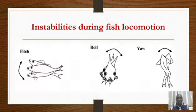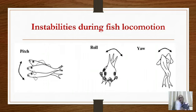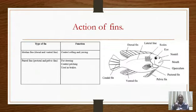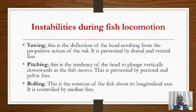That image is showing us yawing — the head getting deflected side to side. If it gets pushed like that, that side-to-side movement would make the fish unstable, which is why we call it an instability during locomotion. Yawing is prevented by the dorsal and ventral fins — the dorsal fin up and the ventral fins down.